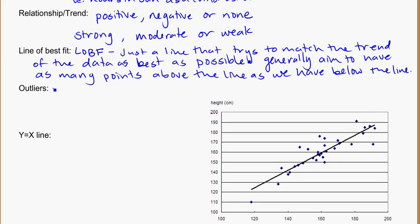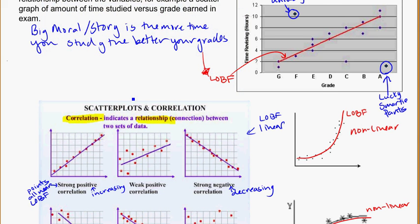Outliers, these are points what we say is unusually far from the trend. So points that are clearly like all the data is doing this one thing and these guys are very clearly not part of the trend. Another example of that would be here, this lucky person. Clearly they have not spent a lot of time studying and they've done very well. They're not following the trend that everyone else is doing.